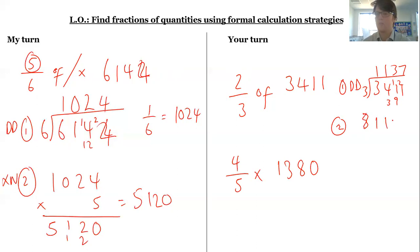So 1,137 times 2: 2 times 7 is 14, 2 times 3 is 6, plus 1 is 7, 2 times 1 is 2, 2 times 1 is 2. I get 2,274.